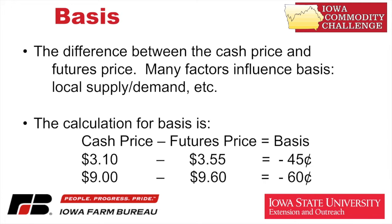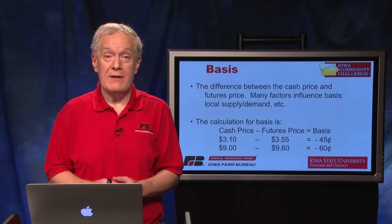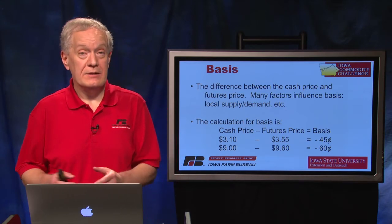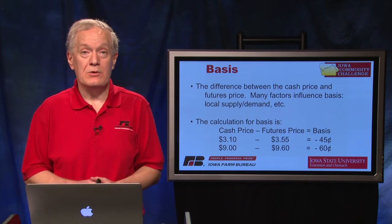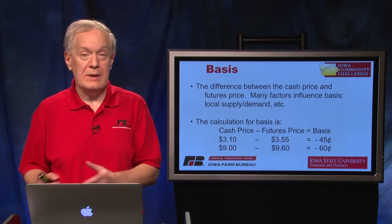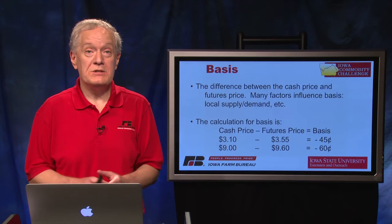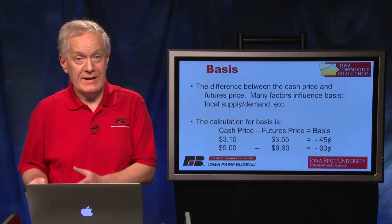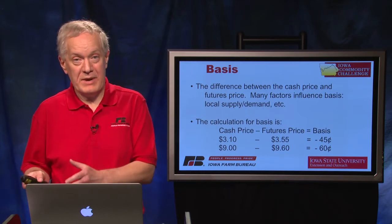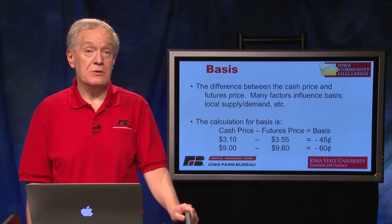In this example, cash at $3.10 less a futures price at $3.55 would get a negative $0.45 basis. Often in the state of Iowa we have negative basis, and that's often going to be the result. Sometimes late in the old crop year, for example, you can have maybe some positive basis. But always if you take cash minus futures, you always end up with that exact basis level that you are experiencing at your local level.